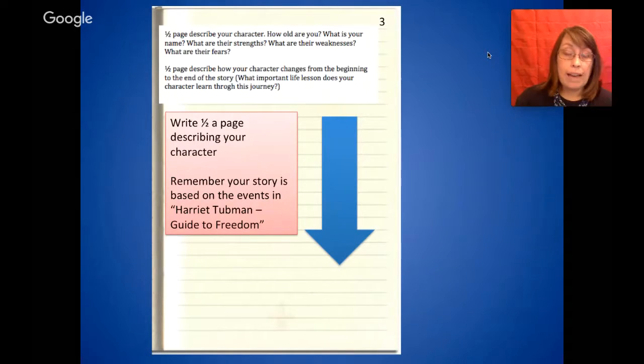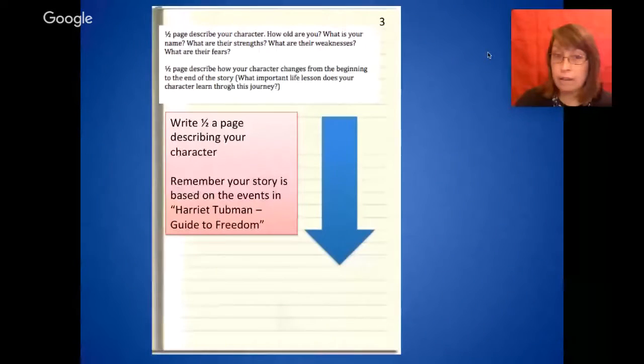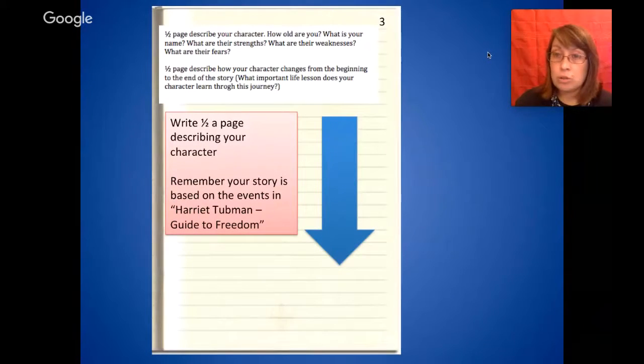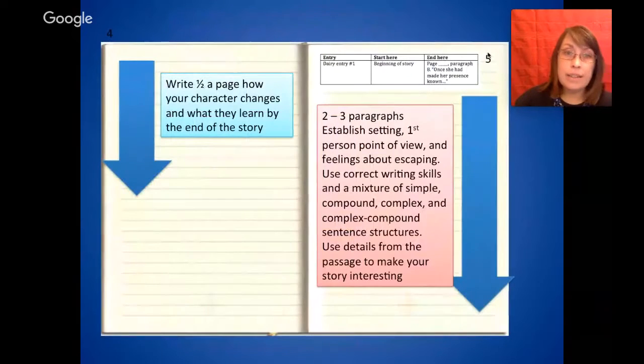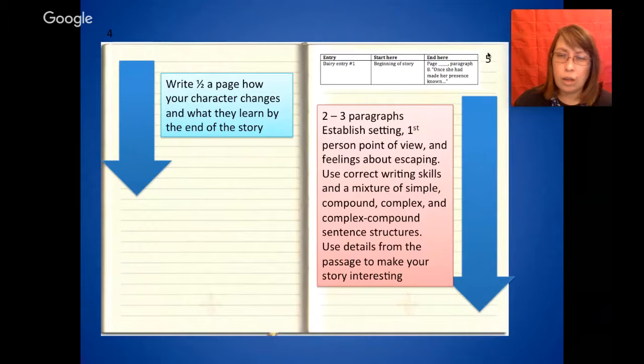Okay, so on page three, you're going to write half a page describing your character. Remember, your story is based on the events in Harriet Tubman's Guide to Freedom. So you can't write a story about a slave escaping on a ship and going to Spain or France. Okay, that's not the story Harriet Tubman's Guide to Freedom. That was about escaping to go to Canada. All right, go ahead and turn the page. On page four, notice that I'm marking for you again the other half page. So a lot of students get confused and only write a half page total. You're writing basically a full page, a half page describing your character and then a half page on how your character changes and what they learn by the end of the story.